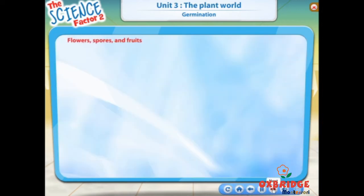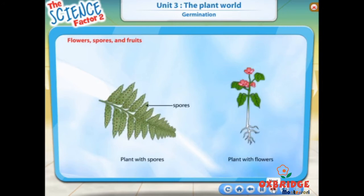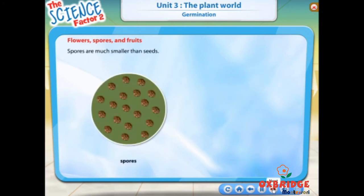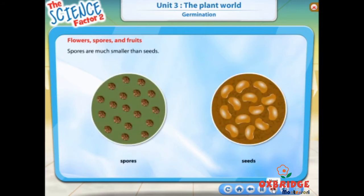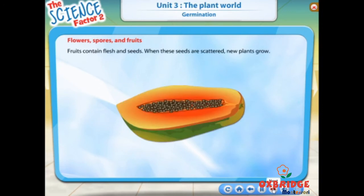Not all plants produce flowers and seeds. Some plants produce spores. Spores are much smaller than seeds. Some plants grow fruits. Fruits contain flesh and seeds. When these seeds are scattered, new plants grow.